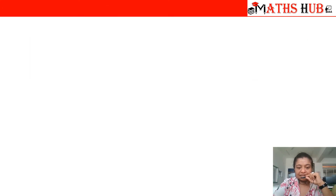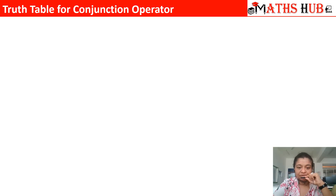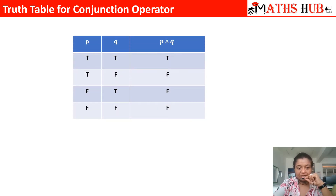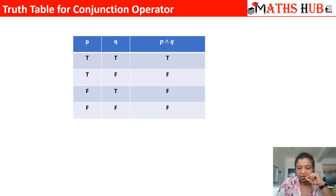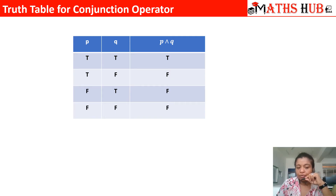Next, let us understand the truth table for the conjunction operator. The inputs to the truth table are proposition p and proposition q, and the output is p and q. The inputs can be: both statements true, one true and the other false, or both statements false.